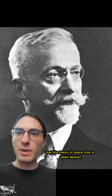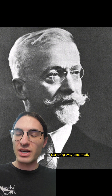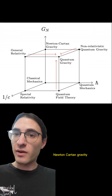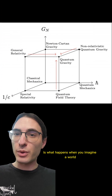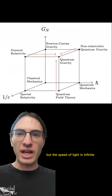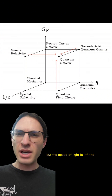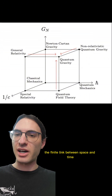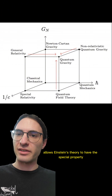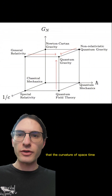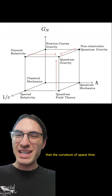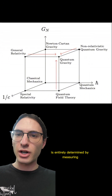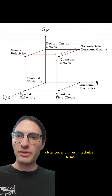It's for that reason that this theory of spacetime is called Newton-Cartan gravity. Essentially, Newton-Cartan gravity is what happens when you imagine a world where general relativity is true, but the speed of light is infinite. But there's a caveat: the finite link between space and time allows Einstein's theory to have this special property that the curvature of spacetime is entirely determined by measuring distances and times.